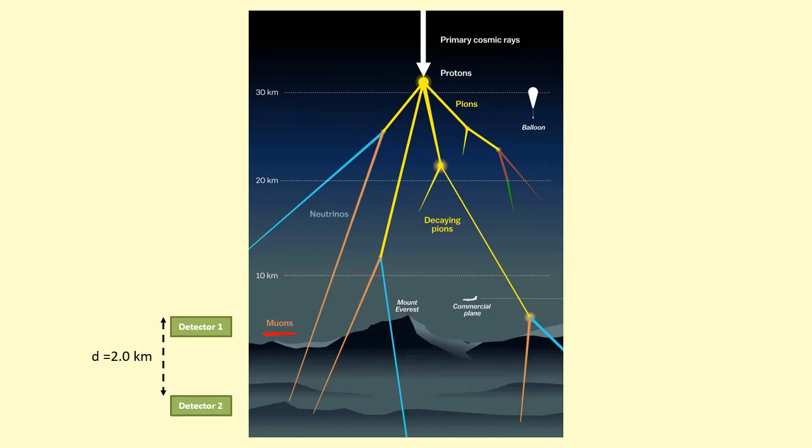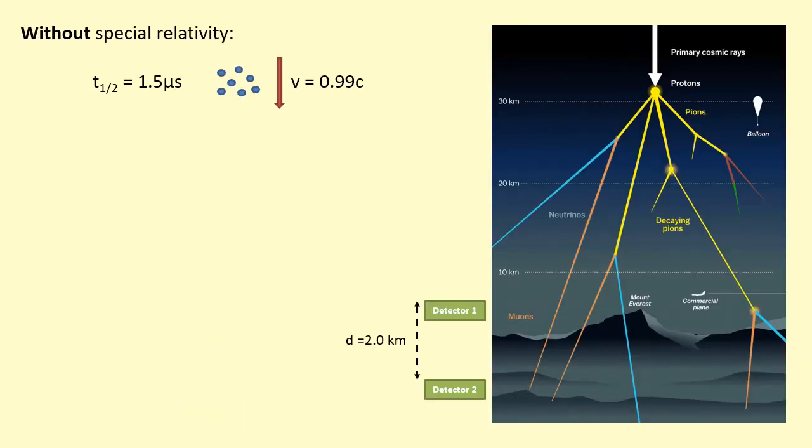Okay, firstly we're going to do without special relativity to see what we expect to happen. We have a bunch of muons here represented by these particles and they're moving downwards at a velocity of 0.99 times the speed of light.